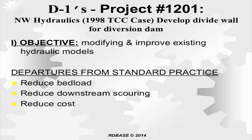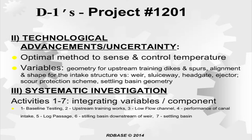The first project is Northwest Hydraulics — the development of a divide well. This was probably the strongest of several projects examined, and the one the judge indicated was clearly indicative of an SR&ED project, stating he could not understand how the CRA would even let it get to court. The objective was to modify or improve existing models that were not predictive enough, with goals of reducing bed load, downstream scouring, and reducing the overall system cost.